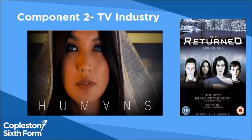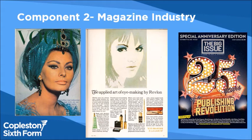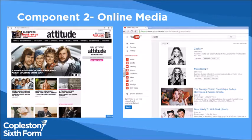In component two, we look at three set industries — specifically the TV industry, where we look at the institutional context of two contrasting examples. We do the same for the magazine industry. We do a set product from the 1960s in the Vogue magazine, and we compare that to a more modern publication, which is the Big Issue. We also study online media, including the Attitude website, and we look at Zoella and the context of her social media presence and how that's shaping society.